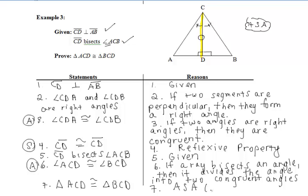We mentioned our first pair of congruent angles in step 3, our pair of congruent sides by the reflexive property in step 4, and our second pair of congruent angles in step 6.